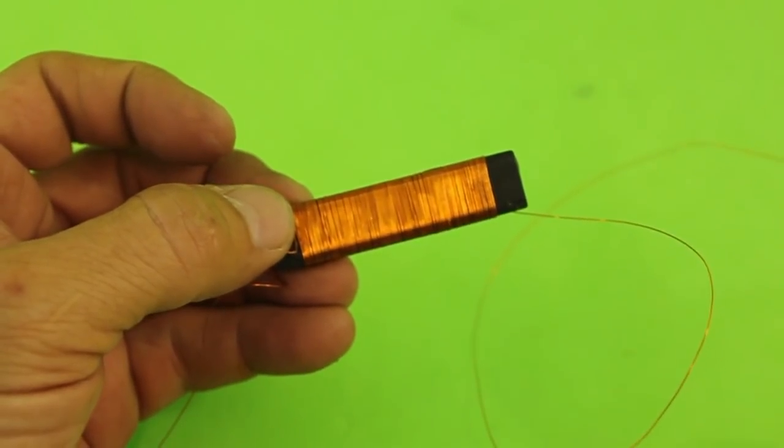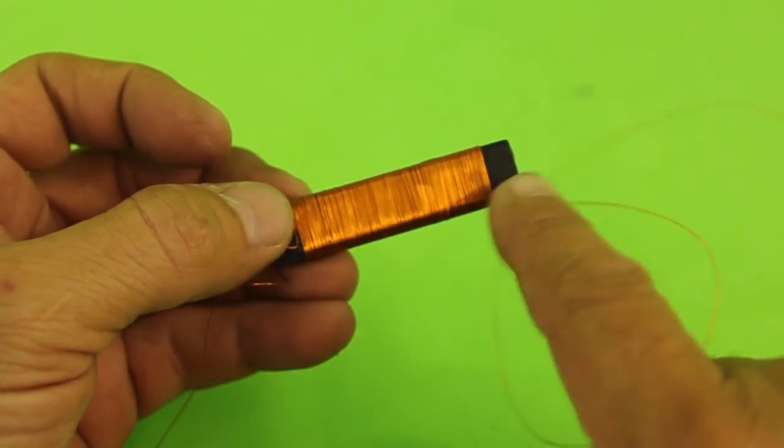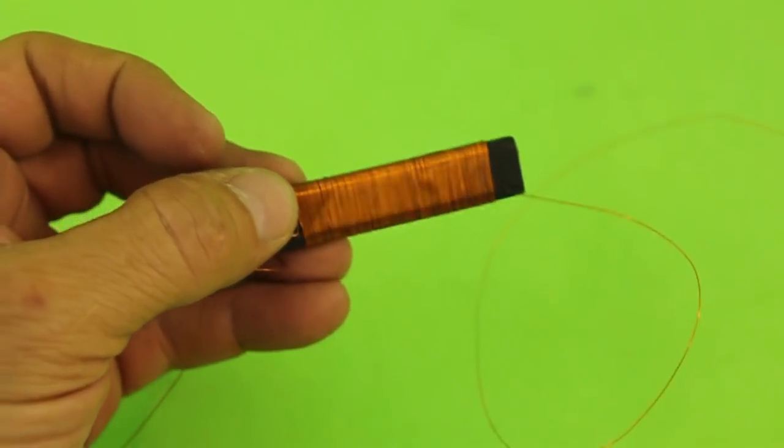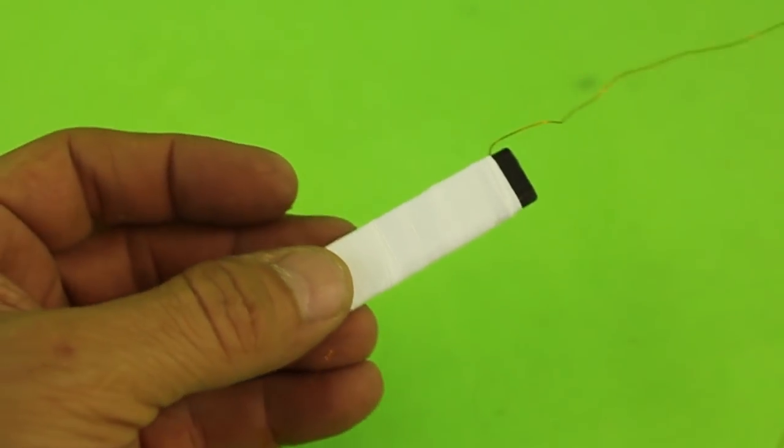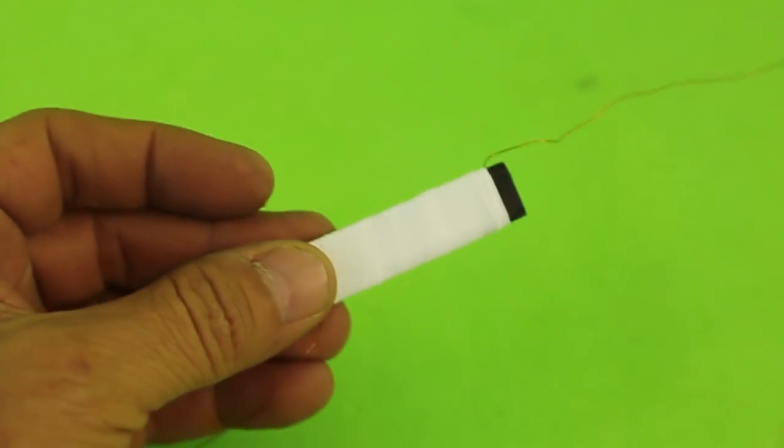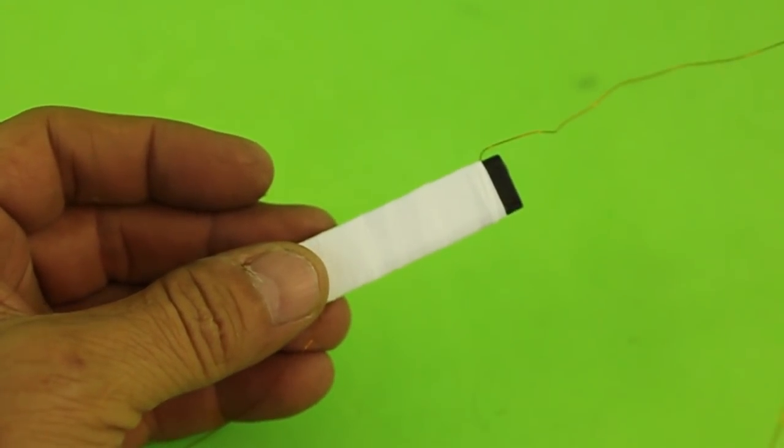But before adding a second layer we need to put some tape on the core. I used Teflon tape and now we are ready to continue to wind our turns.